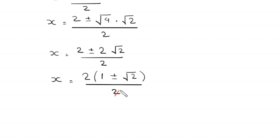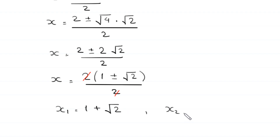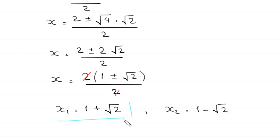The 2s cancel, giving us two values of x: x₁ equals 1 plus square root of 2, and x₂ equals 1 minus square root of 2. These are the two solutions of this equation.